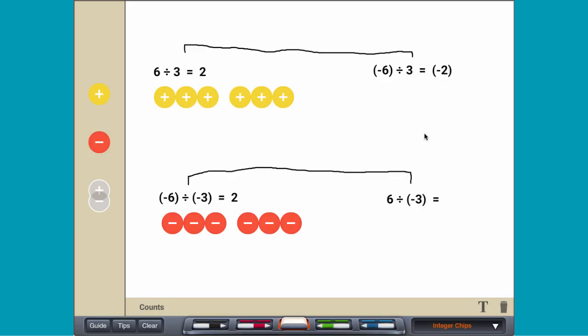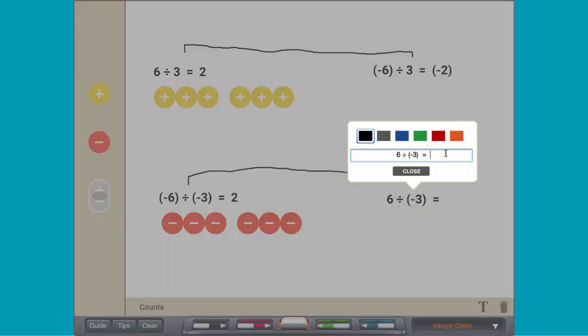Similarly, the number of groups of negative 3 that can be made from positive 6 is the opposite of the number of those groups that can be made from negative 6.